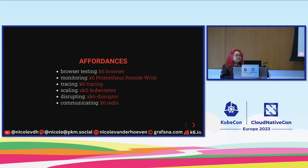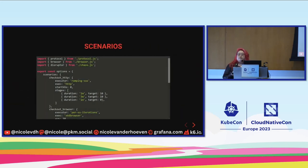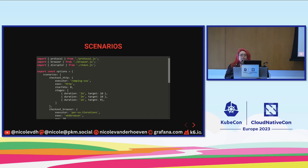Here are the affordances: browser testing, monitoring, tracing, scaling, disrupting, and communicating — all available. This is the starting line for any load test. How do we put them together? I think the standard way, as a tester, is through something like scenarios. In K6 there are three scenarios running concurrently: Checkout HTTP is the protocol-level one, Checkout Browser is the browser one, and Disruptor is the xk6 disruptor. Each can have different stages, test parameters, and virtual users. They can all run at certain times. But this still isn't really generative or emergent — it's still pretty basic.